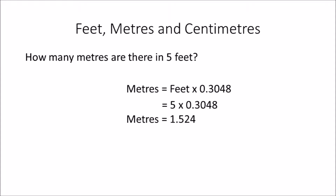Example 2: How many meters are there in 5 feet? Using meters = feet × 0.3048, we calculate 5 × 0.3048, which equals 1.52 meters.